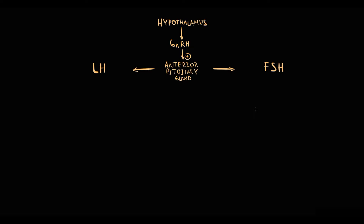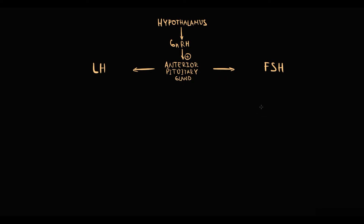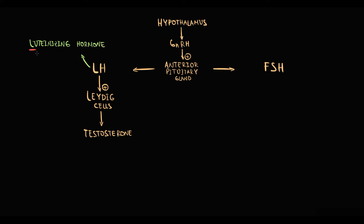Until this point the pathway is the same for men and women, but from this moment the pathways diverge. In males, luteinizing hormone acts on Leydig cells and stimulates testosterone production. This is easy to remember because of the first three letters — LH stimulates Leydig cells and stimulates testosterone production.